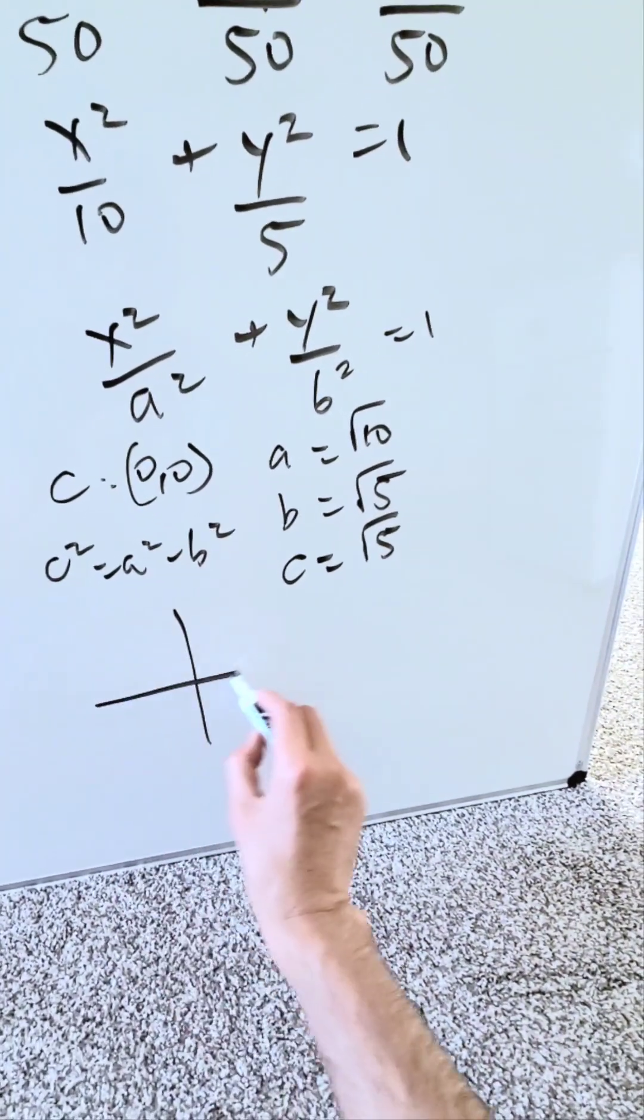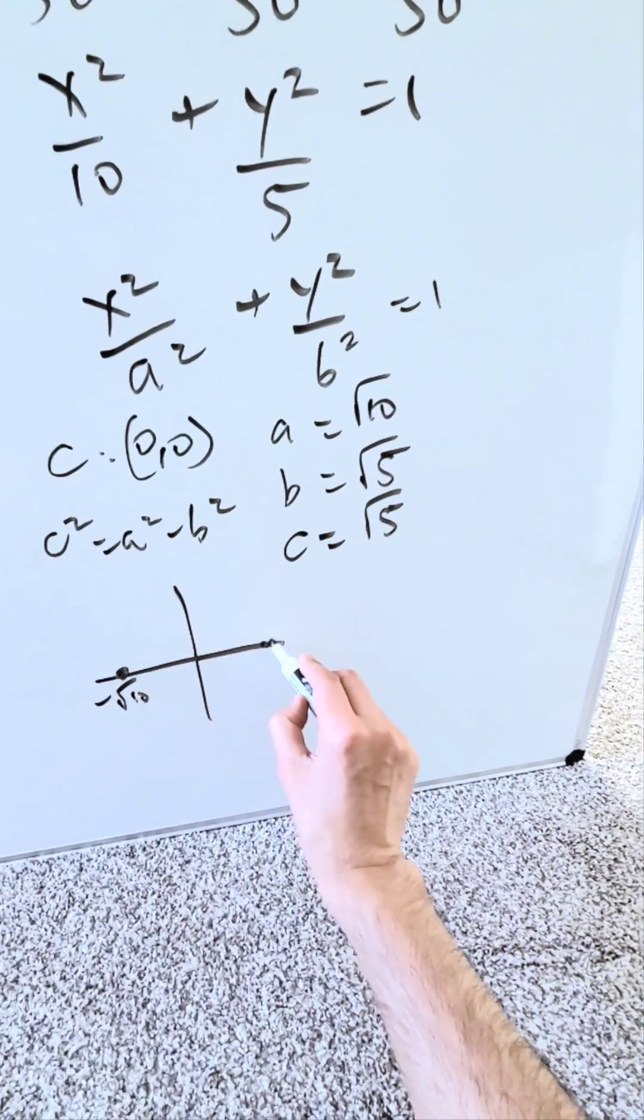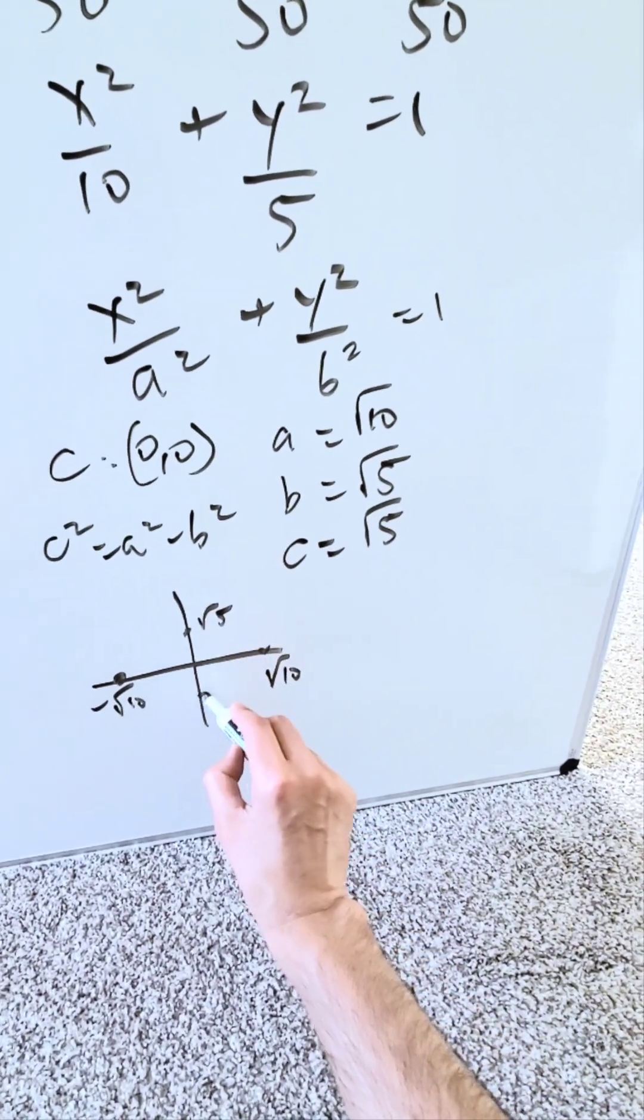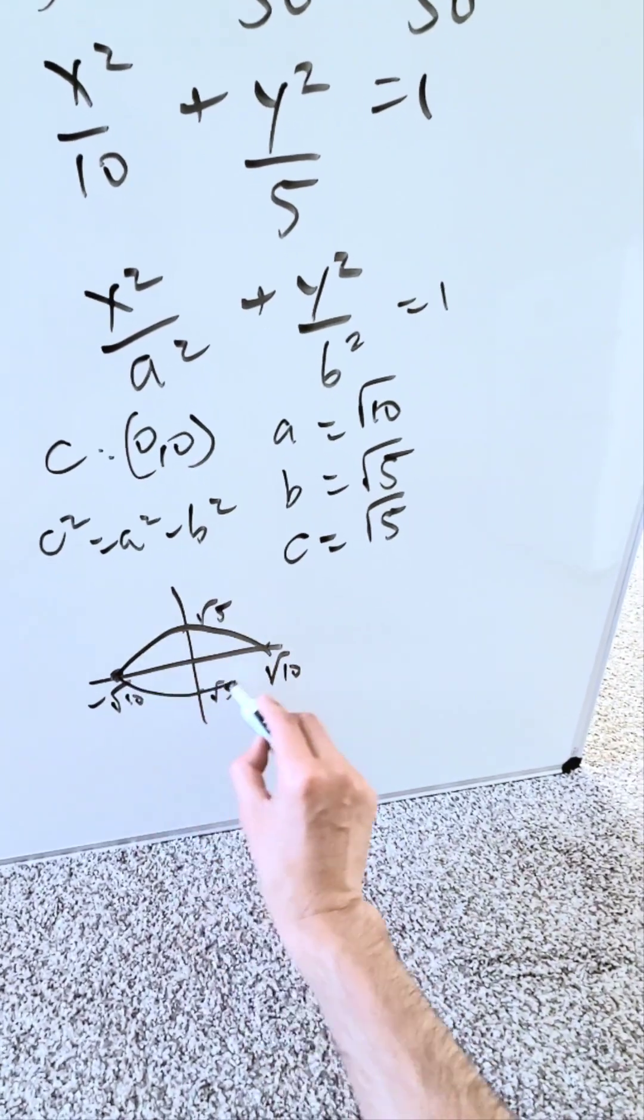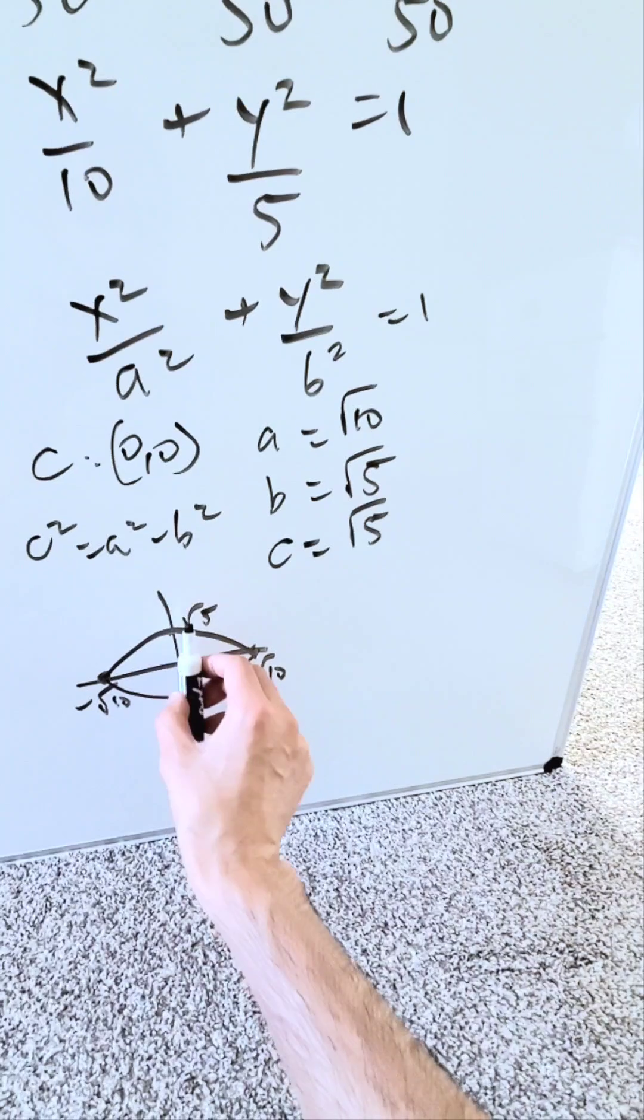What do we have here? An ellipse. Root 10 minus positive root 10. We don't have to be too accurate. Root 5 positive minus root 5. I'm looking here at an ellipse horizontally oriented. My major axis is going to be 2 root 10. My minor axis will be 2 root 5.